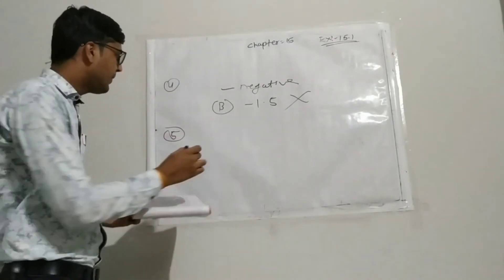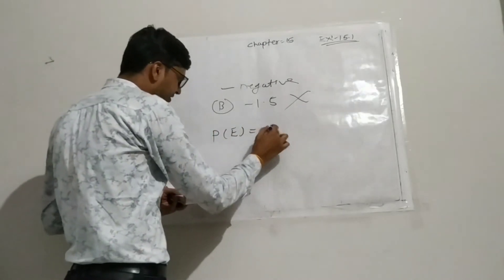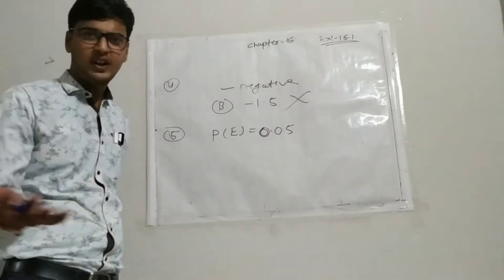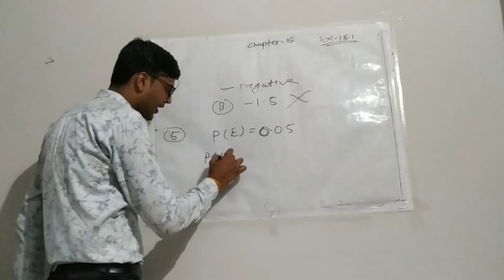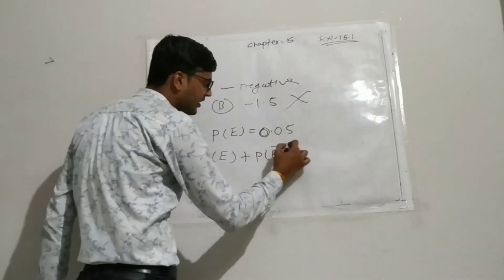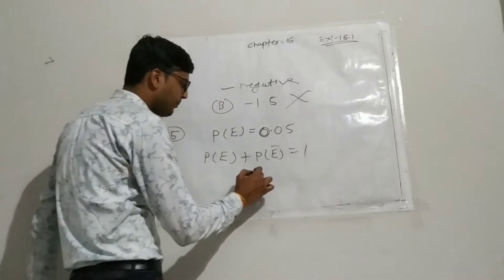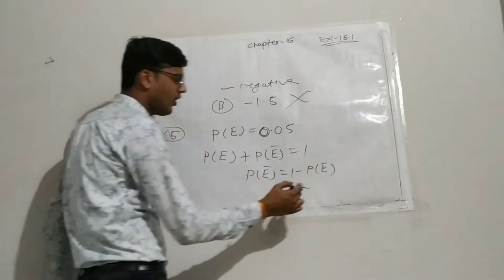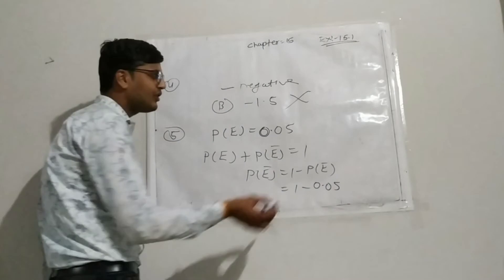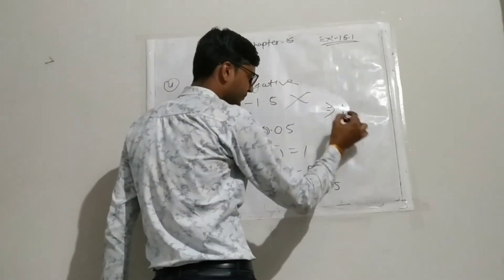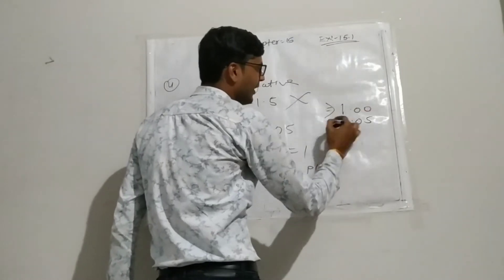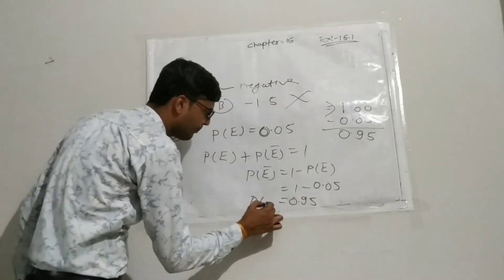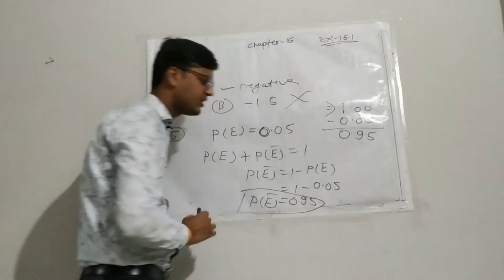Now we move to question number five. If P(E), you are given the value of P(E) is 0.05, then what is the probability of P(not E)? How we calculate? We know this formula: P(E) plus P(not E) is equals to 1. So simply P(not E) equals 1 minus P(E). So simply 1 minus value of P(E) is given, 0.05. So this is 1 and this is 0.05. So 0.95 is value of E not. So this is our answer.